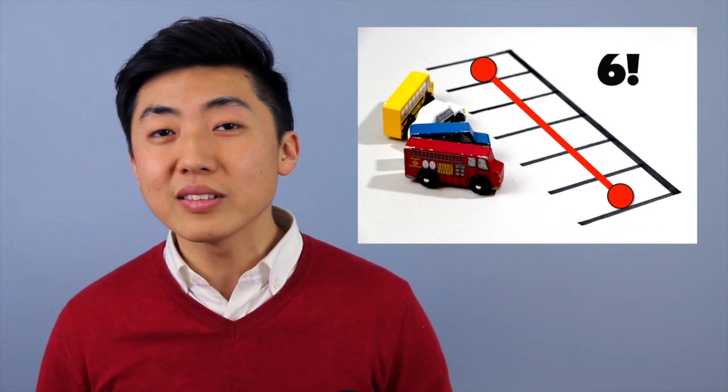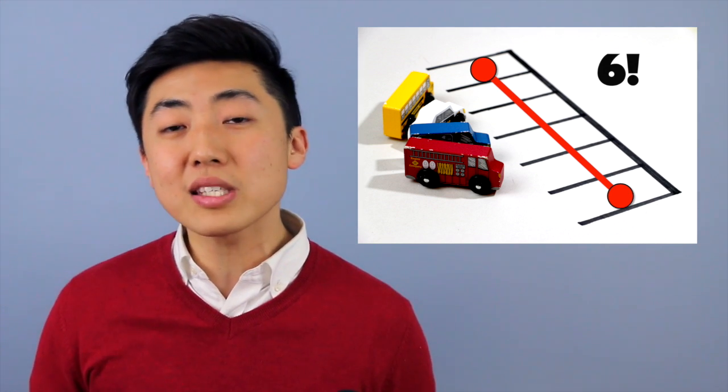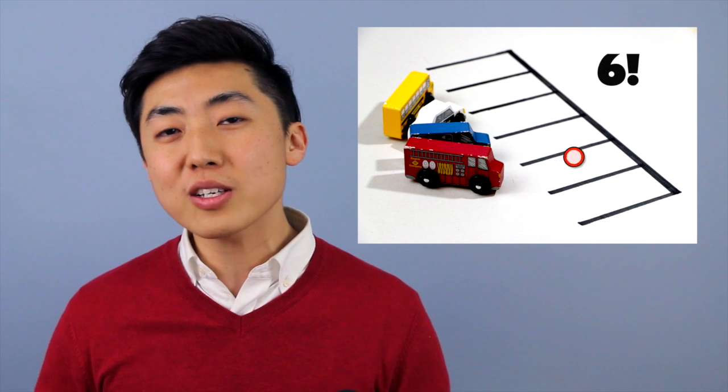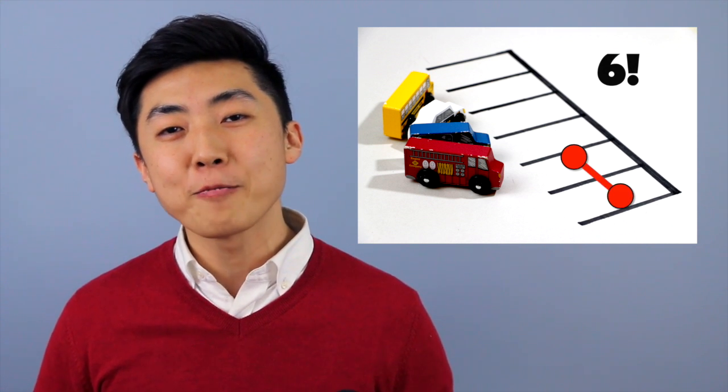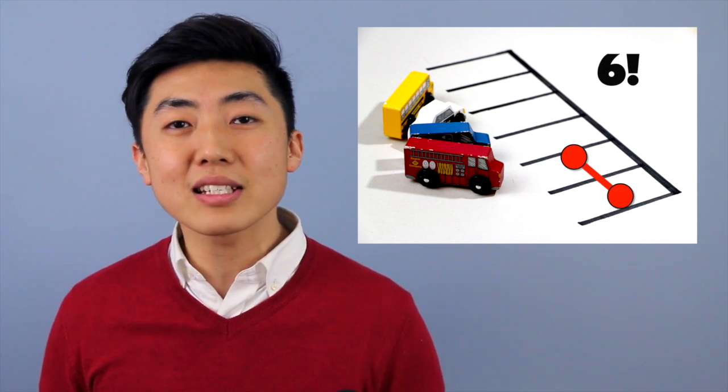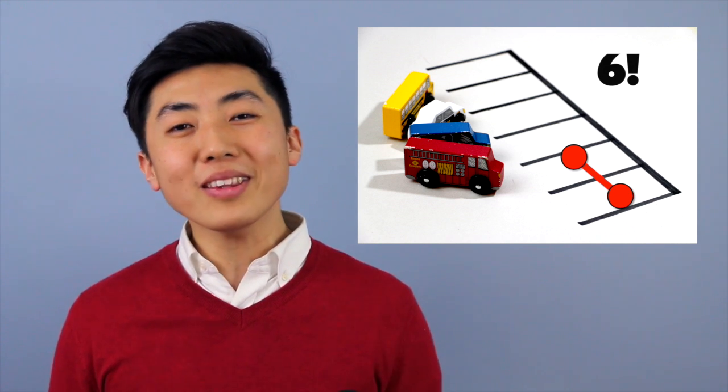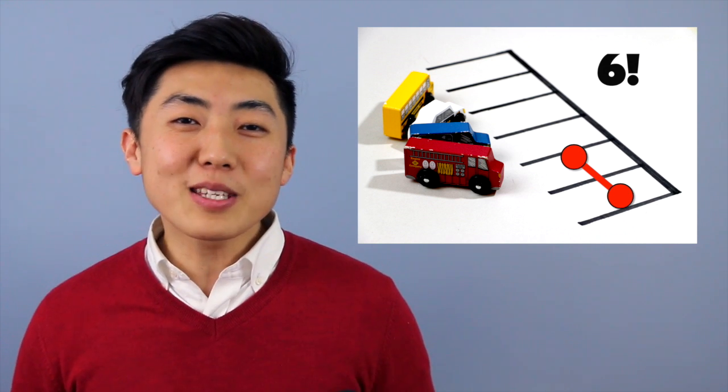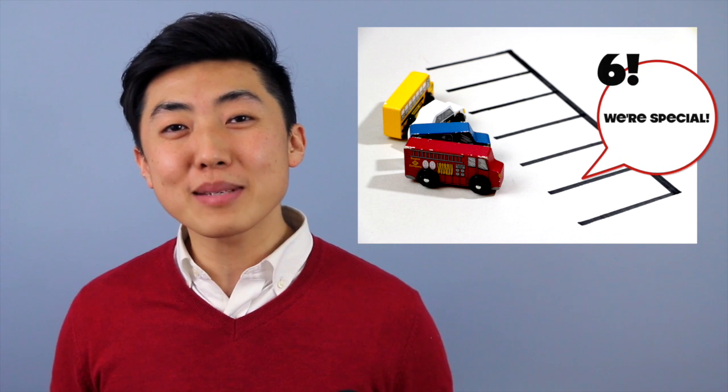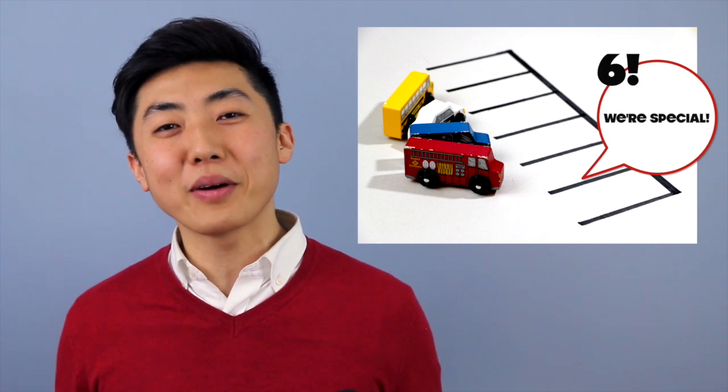So should we start with six factorial? And yes, because just like I said, we still have six choices, four cars and two empty spaces. So our math still says six factorial. But what about these two empty spaces? So these two empty parking spaces are very special and they're special because we can't tell them apart.